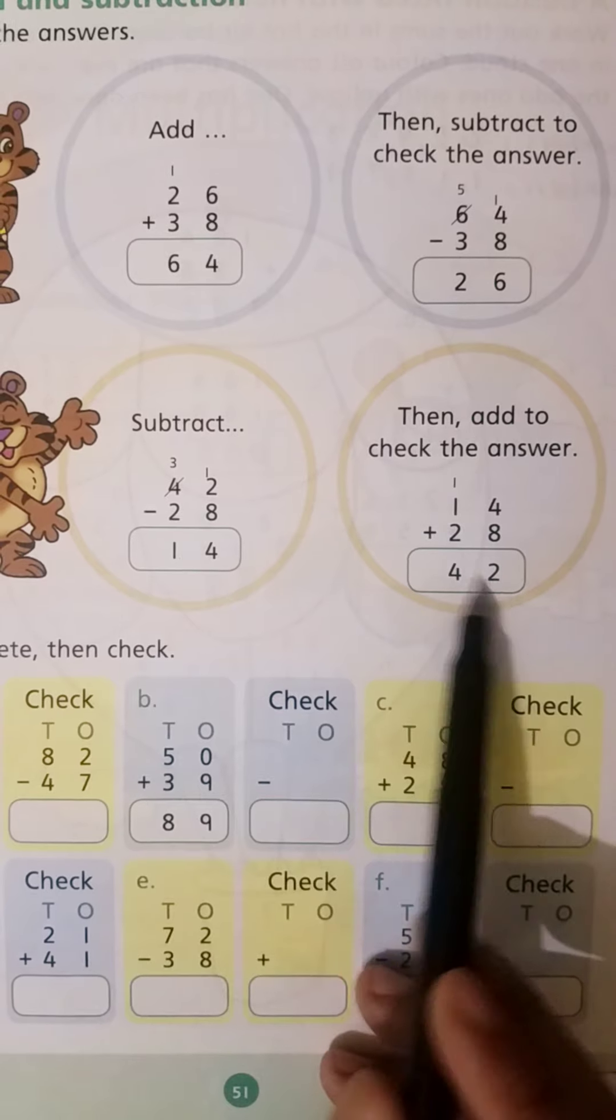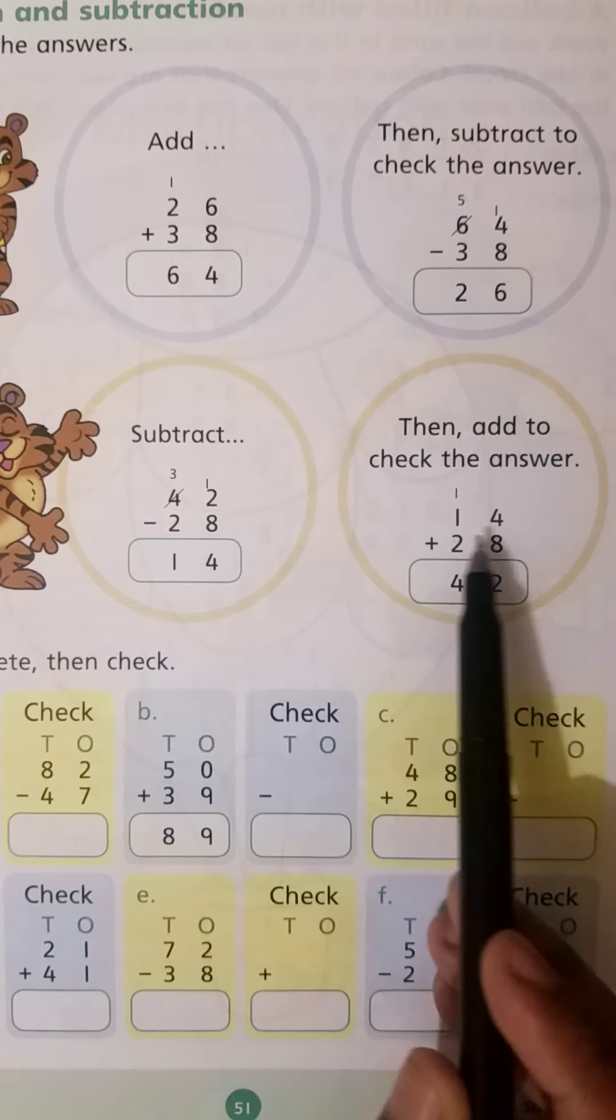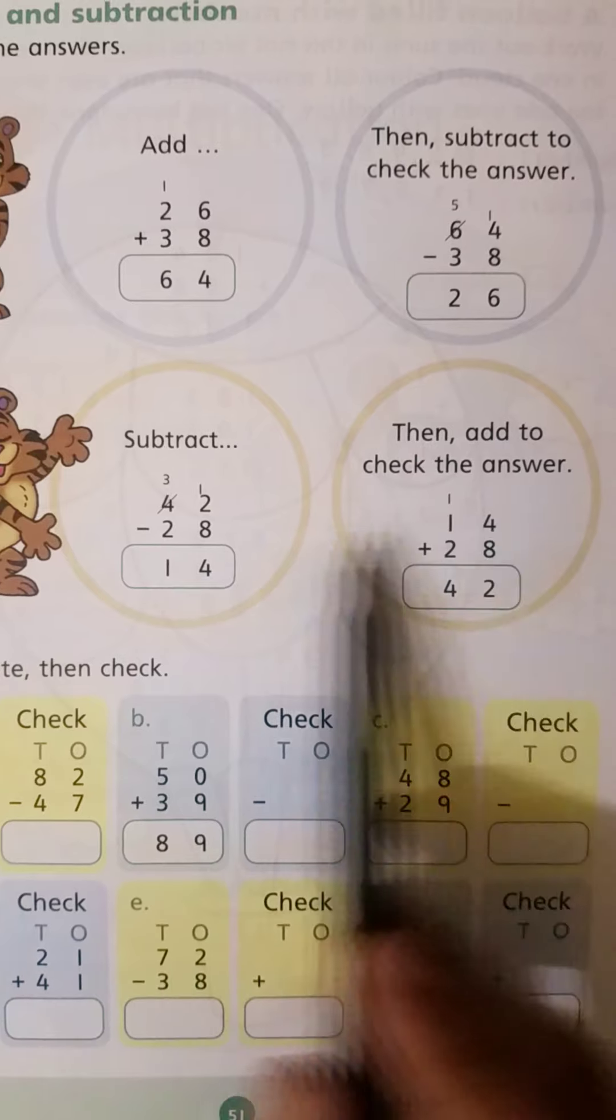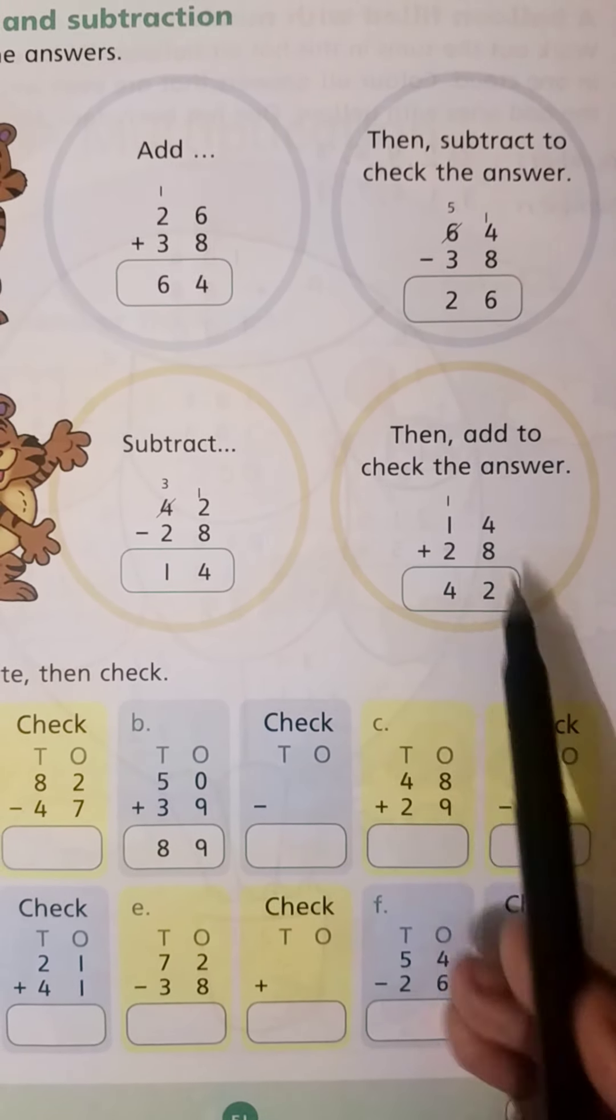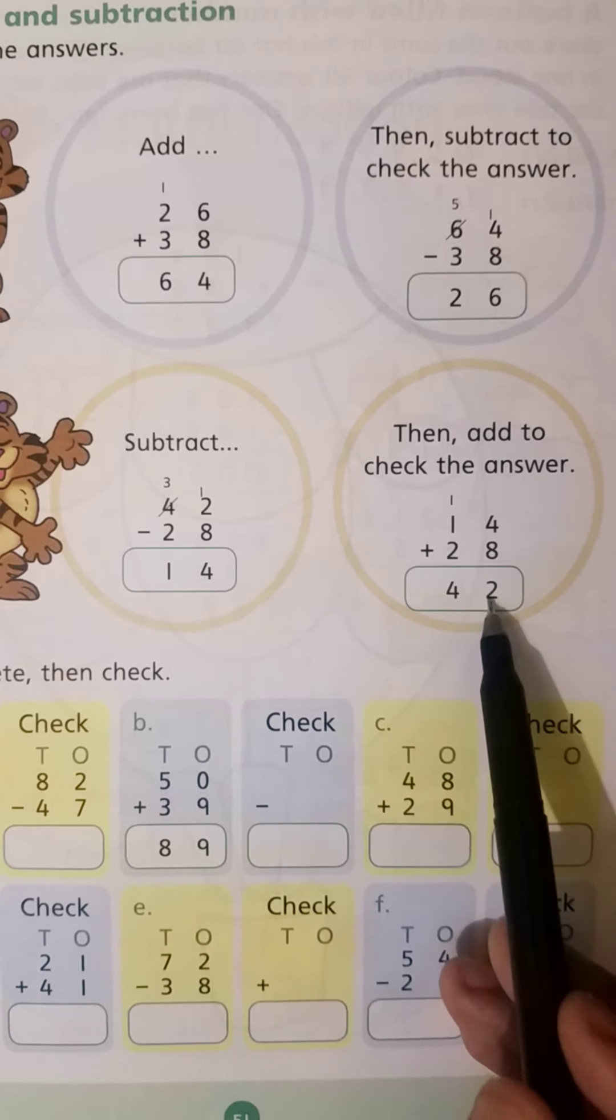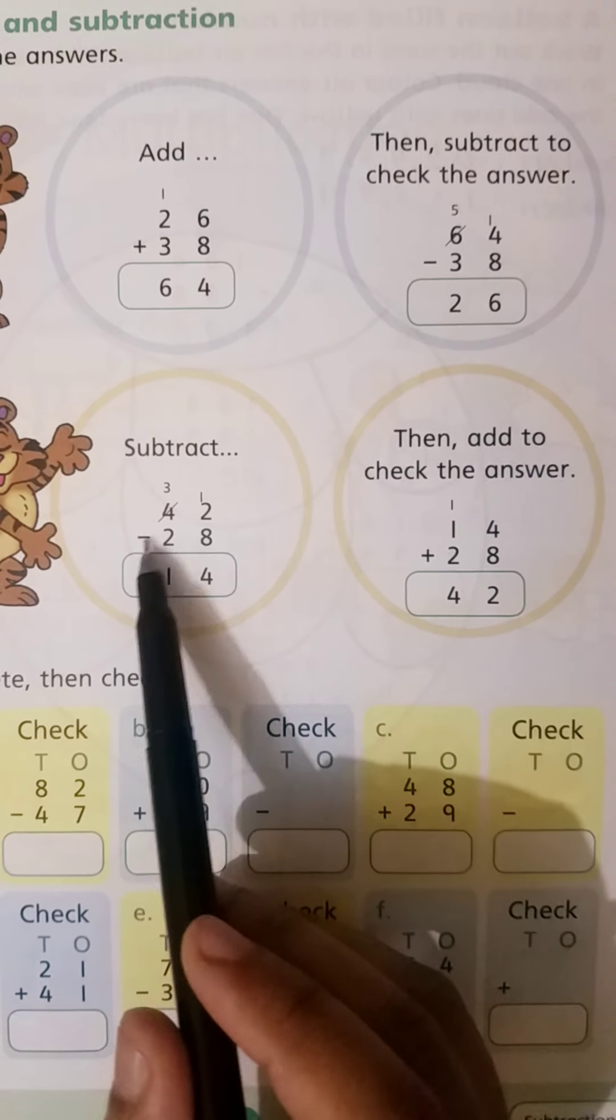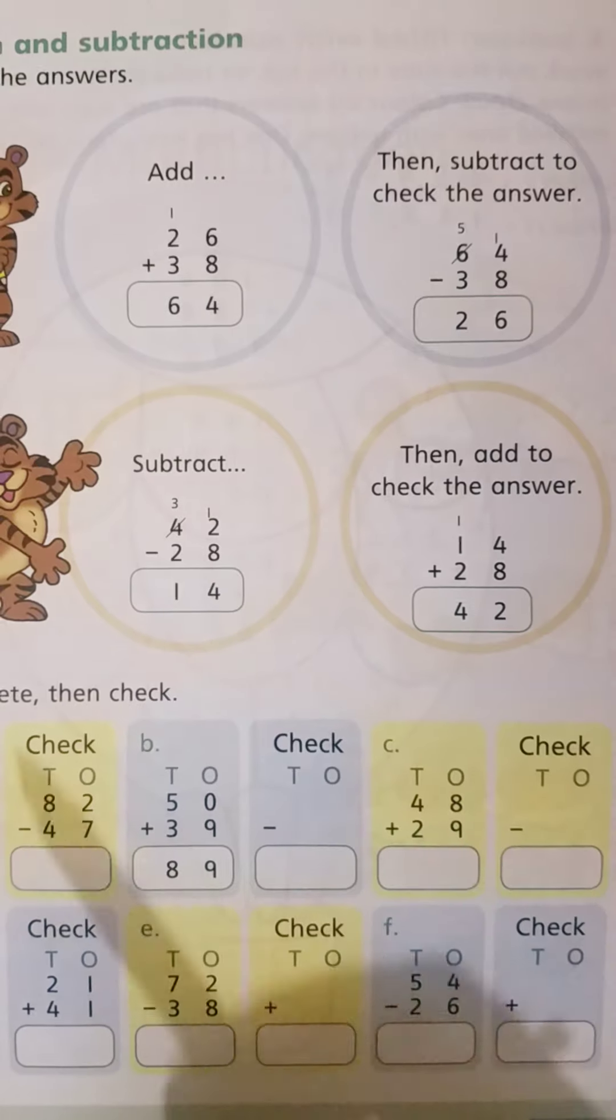Here the first number was subtracted and the answer is 14. Then write 14 here and the second number is 28, write 28 here. Add both numbers. The answer is 42, and 42 is the first number of the subtraction question.